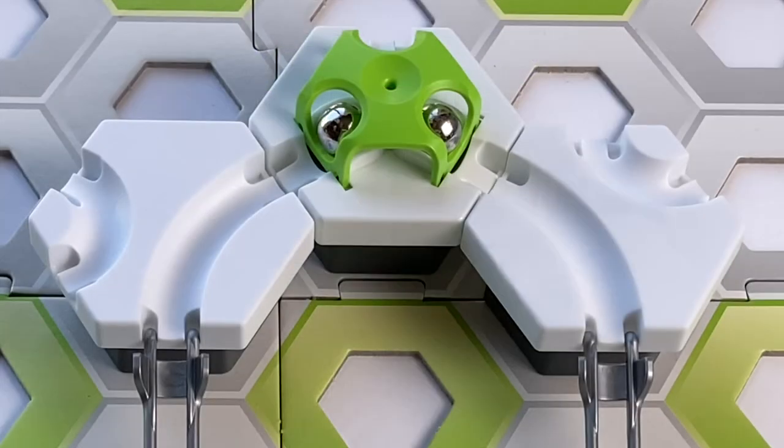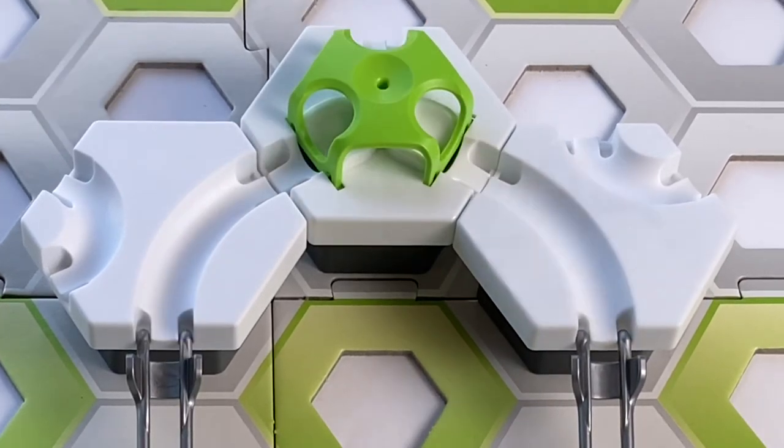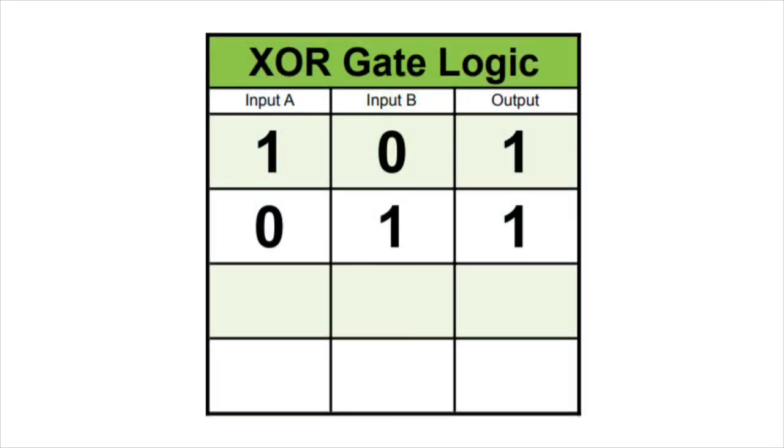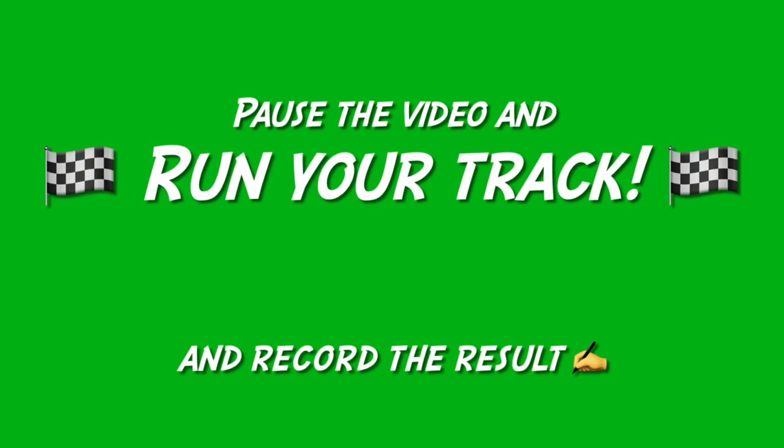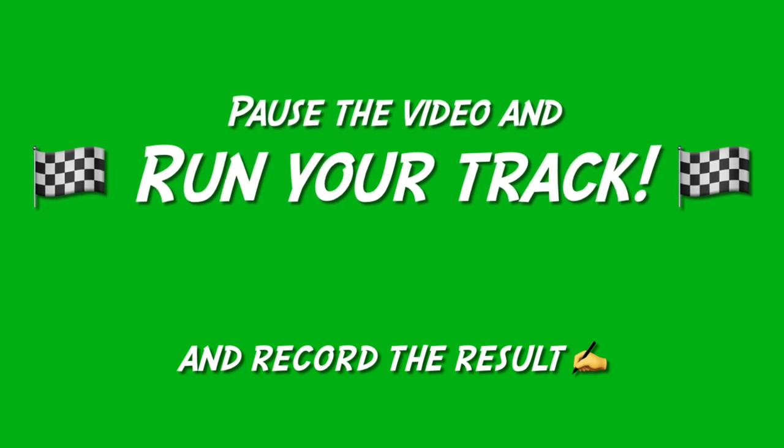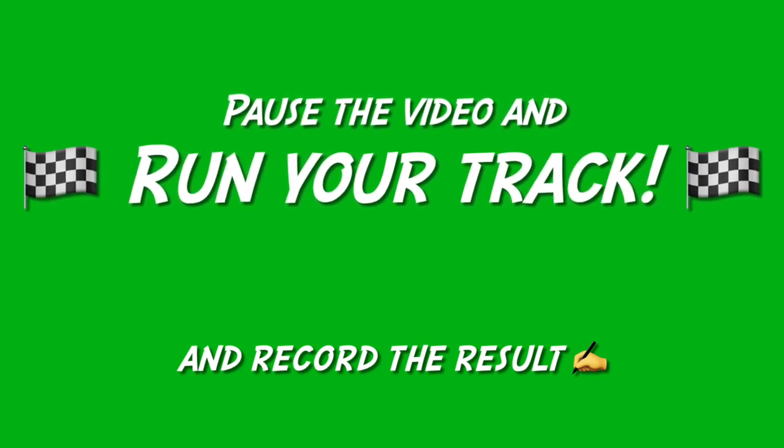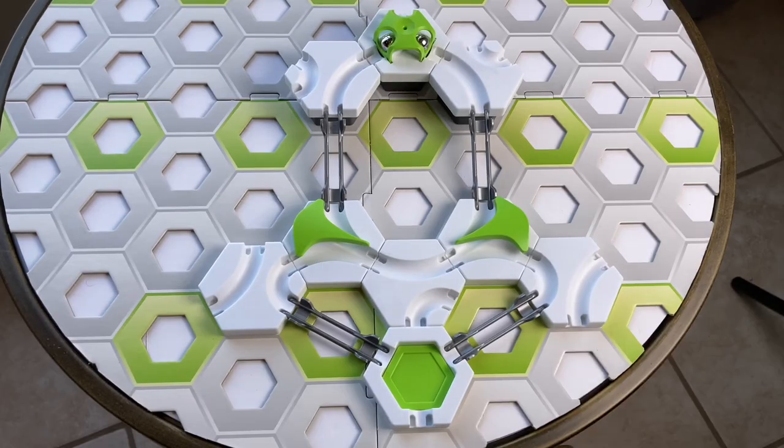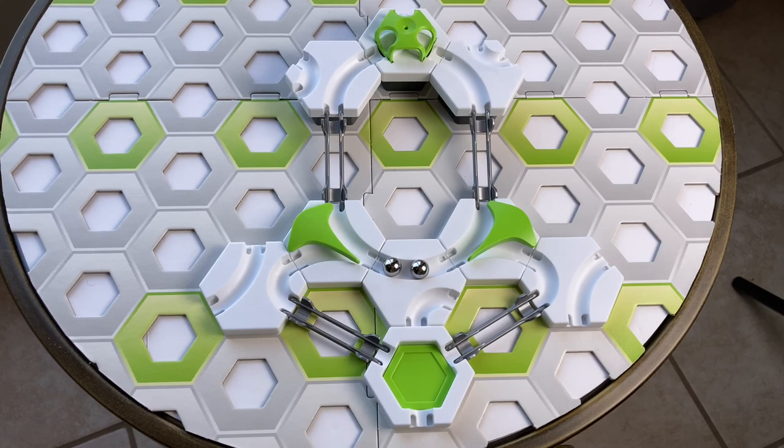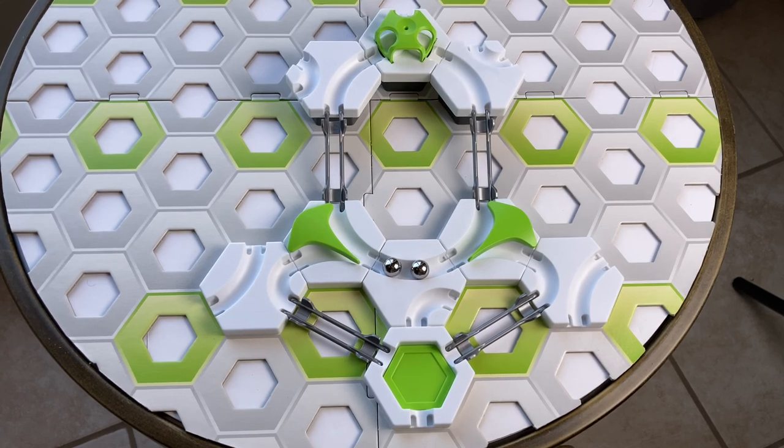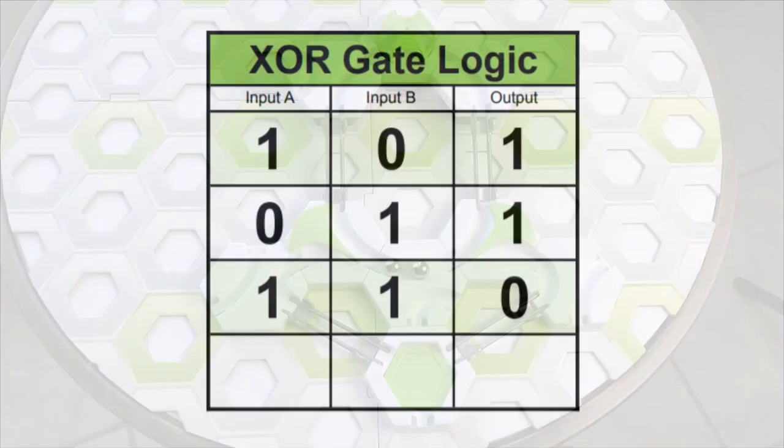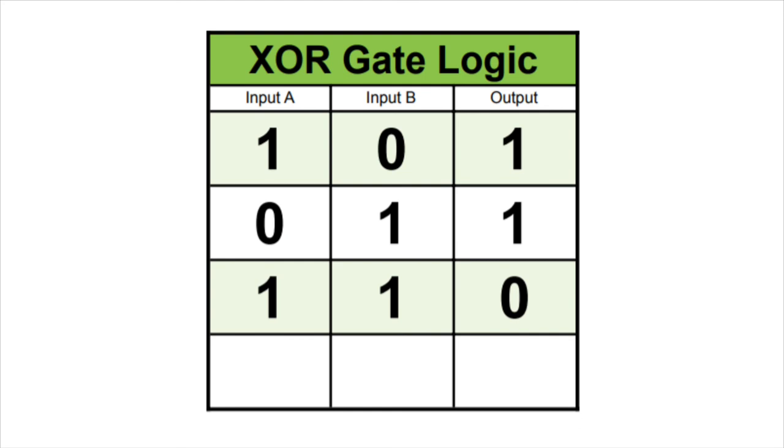Now let's set both Input A and Input B to 1. Pause the video, run the track, and write the result in the third row of your logic table. Okay, what happened? The two marbles should have collided, resulting in no marbles in the landing pad. So what did you write in the third row of your logic table? It should say 1, 1, 0.